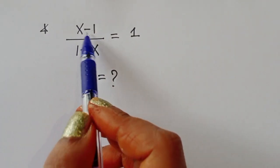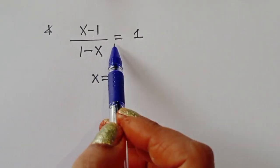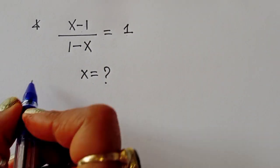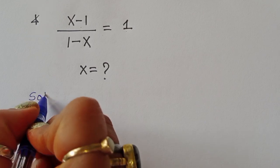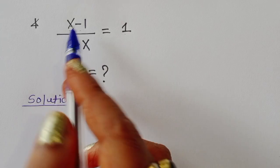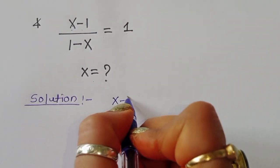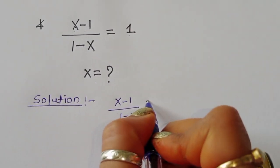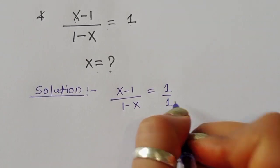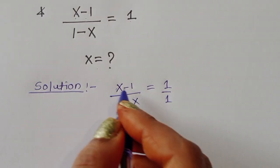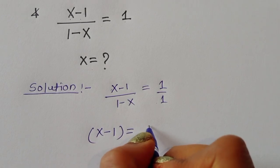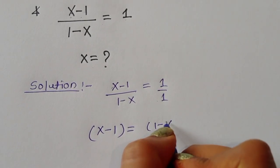The question is: (x minus 1) divided by (1 minus x) is equal to 1. We have to find the value of x. Let's see the solution. Taking the given question, (x-1)/(1-x) = 1. If we do cross multiplication, we get (x minus 1) times 1, so it becomes x minus 1 is equal to 1 times (1 minus x).